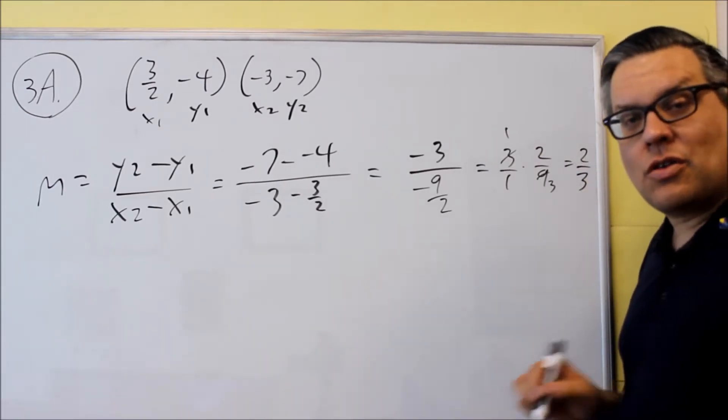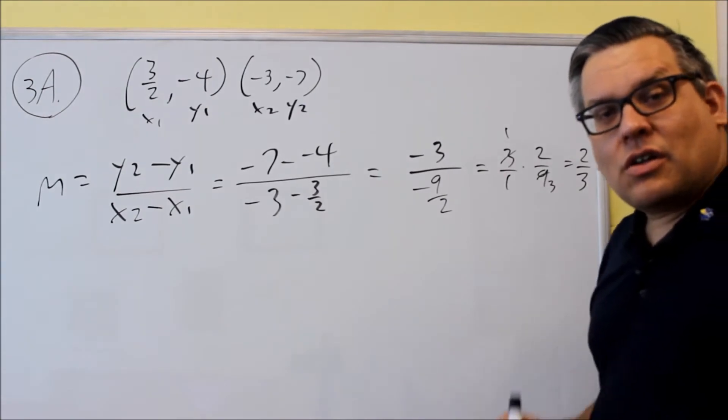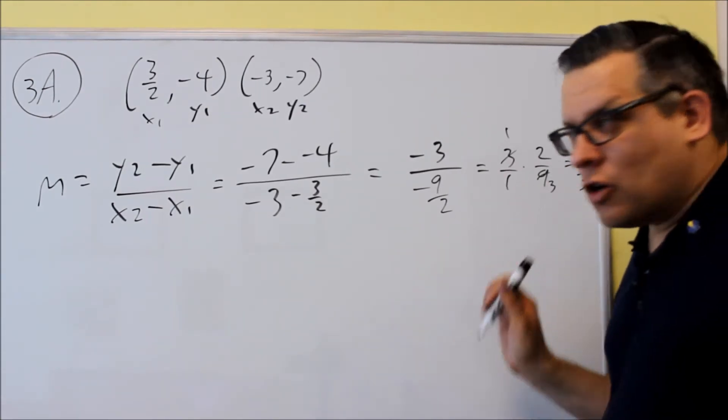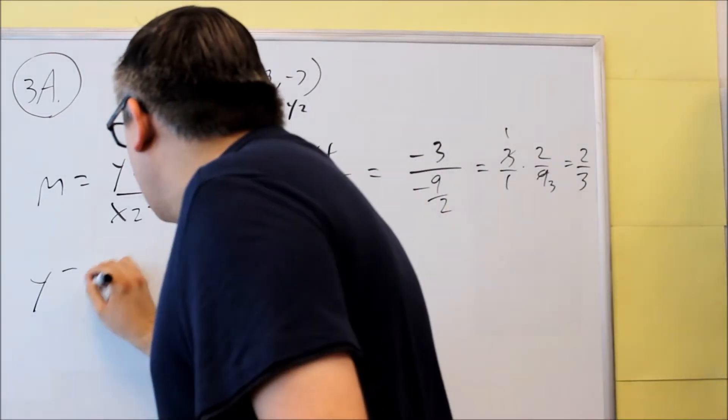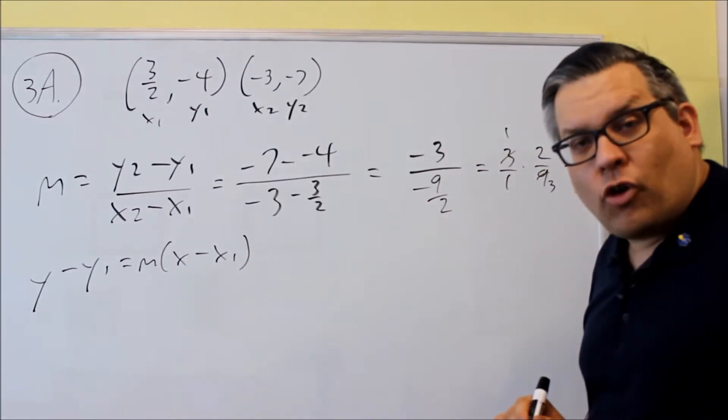So 2 thirds is going to be the slope. Now you don't want to just put this as your answer because it's asking you to find the equation of a line. So once we find the slope, this is the second thing you want to do. You want to use this formula, which is a point slope formula.